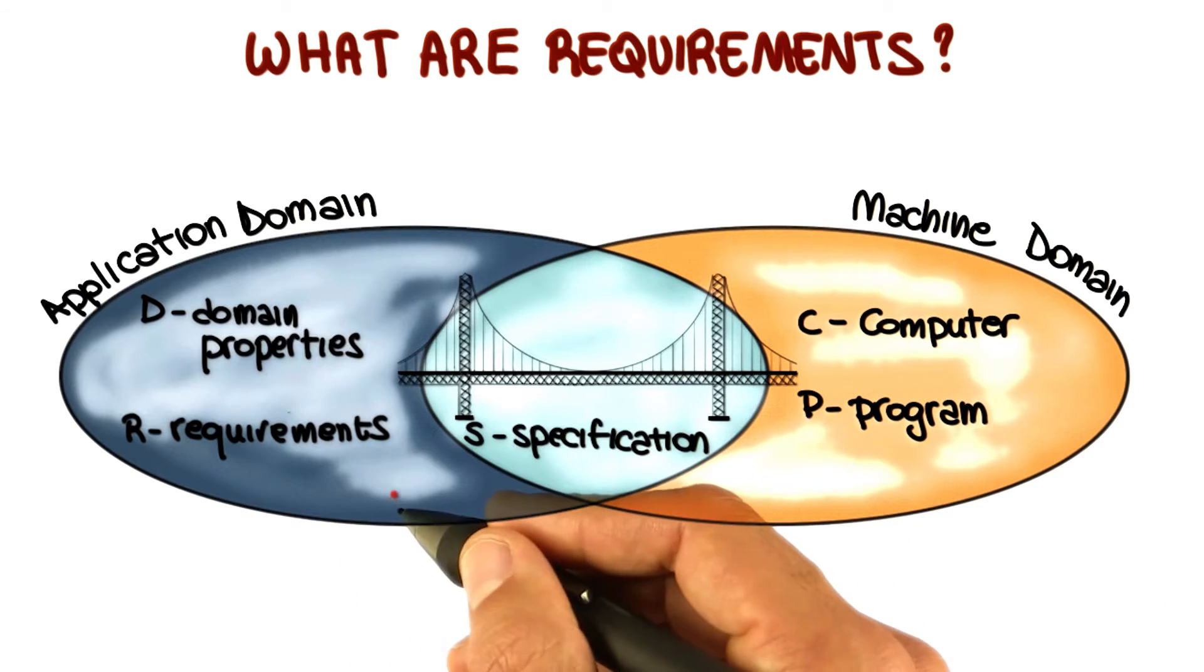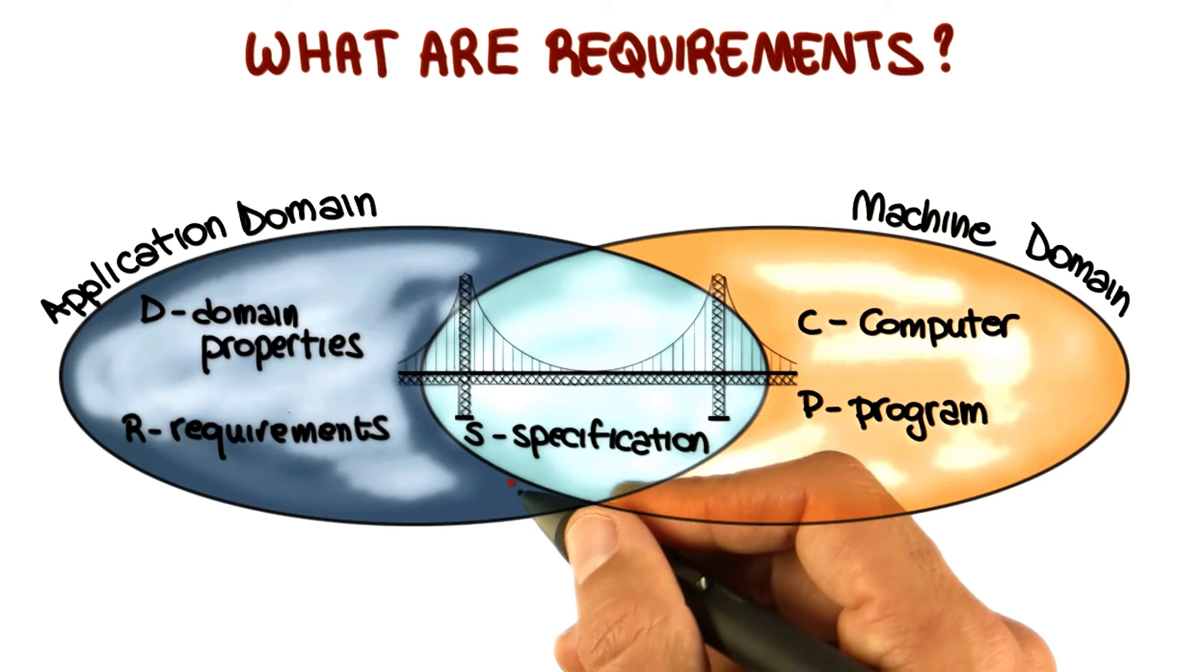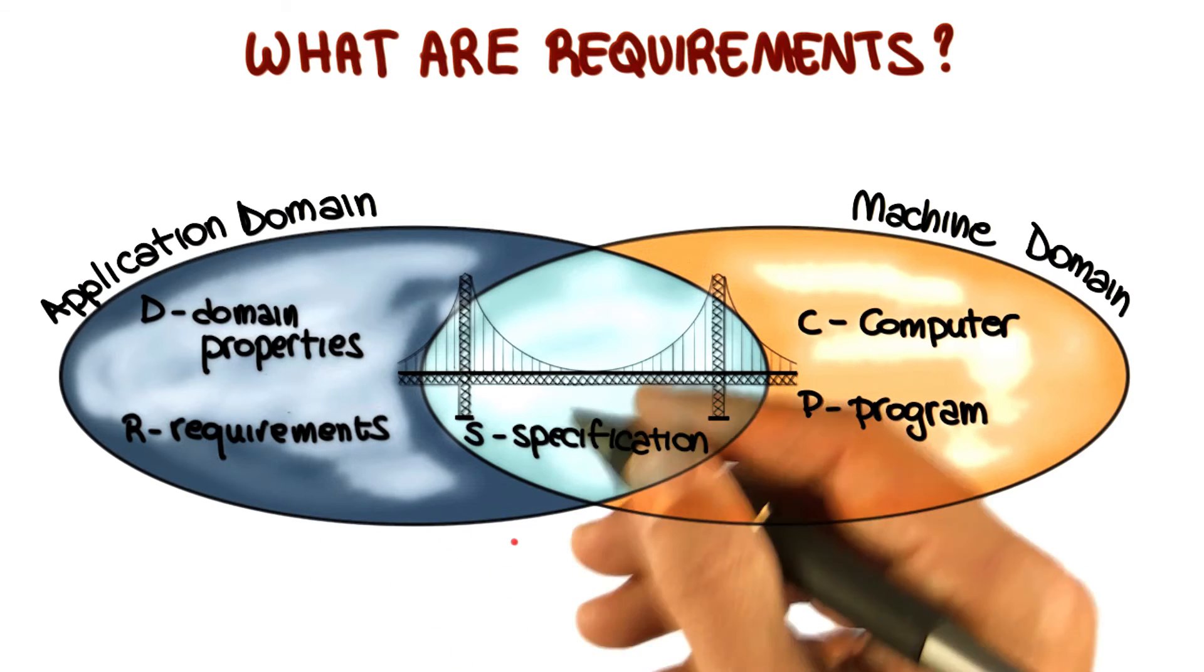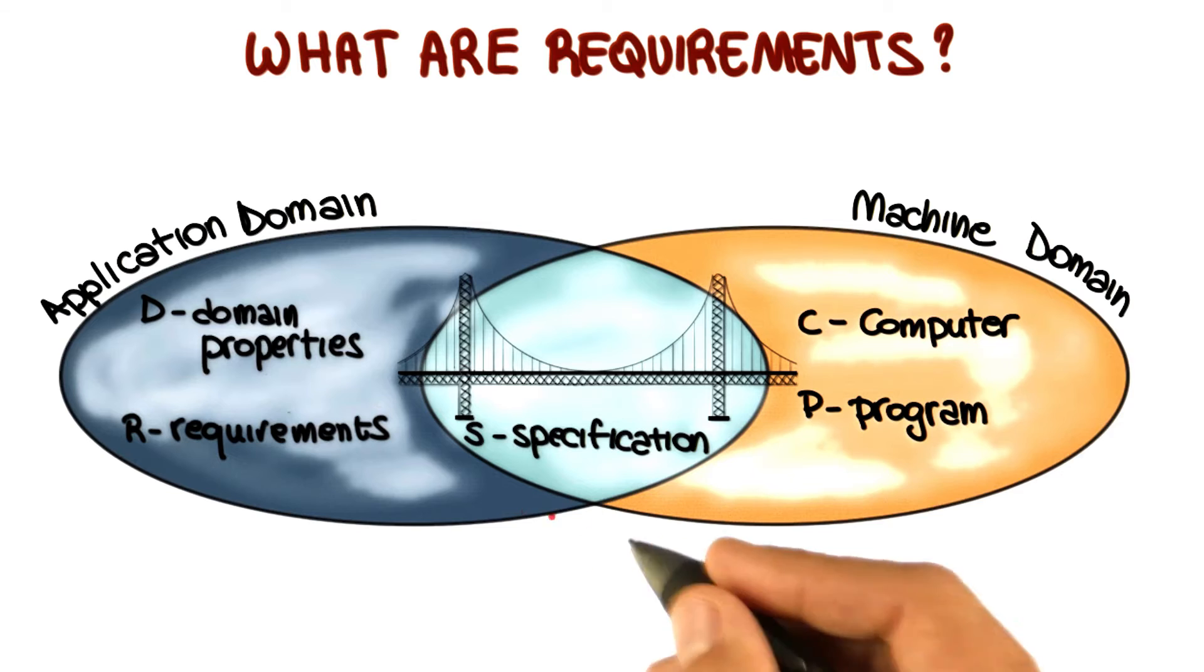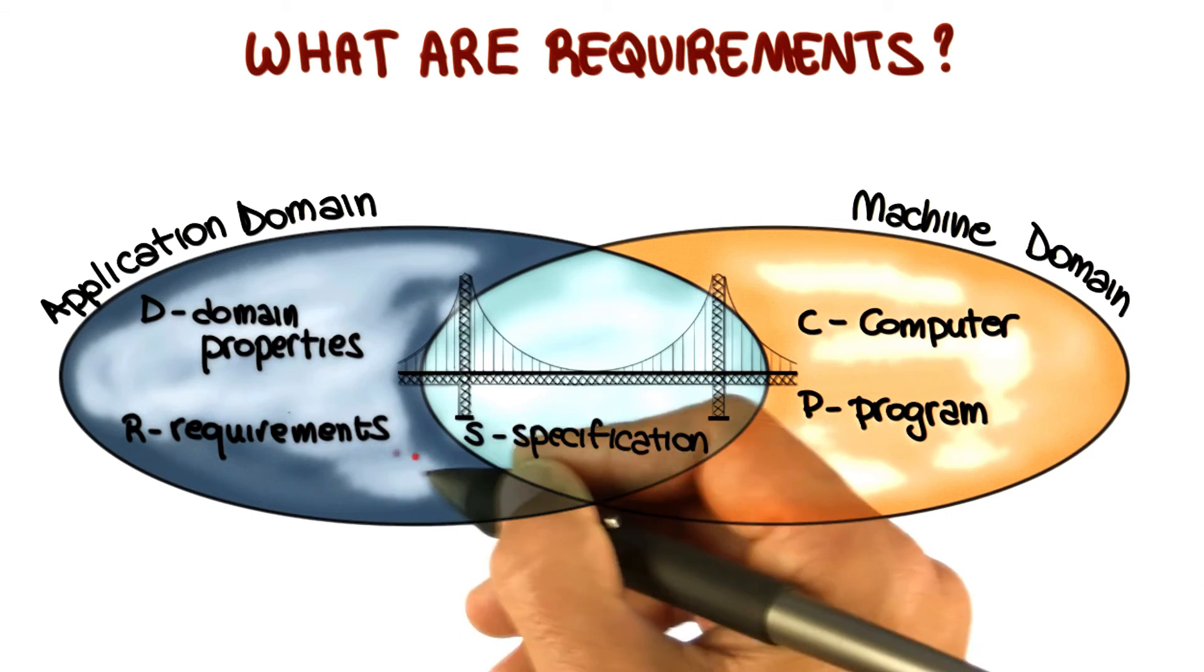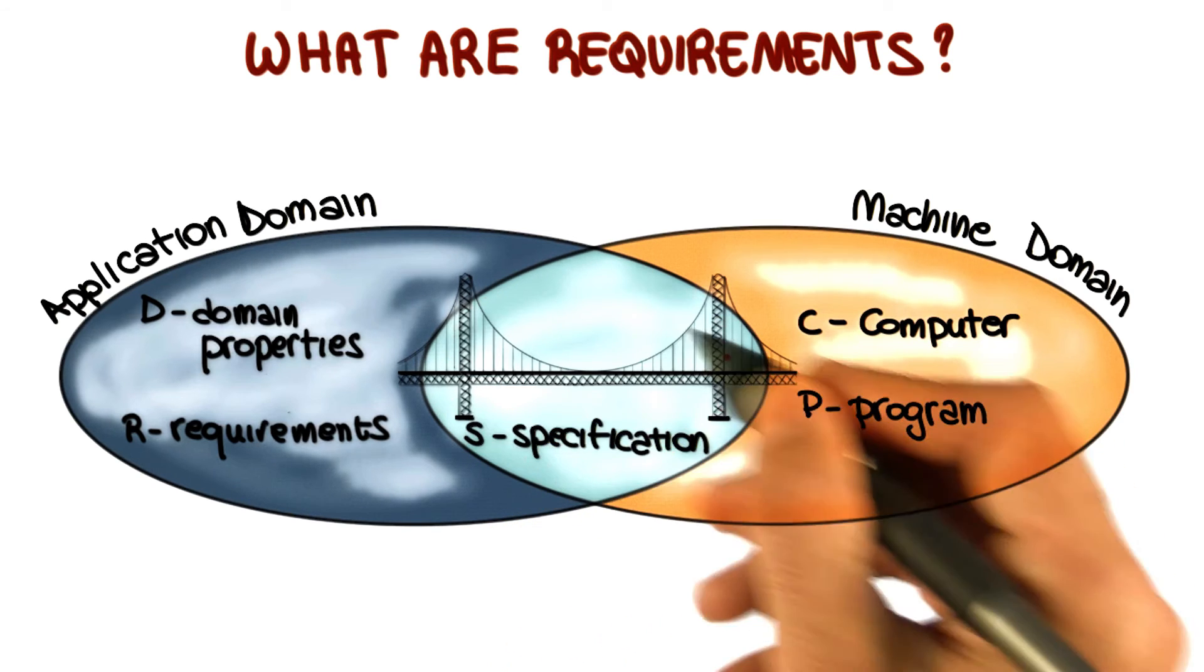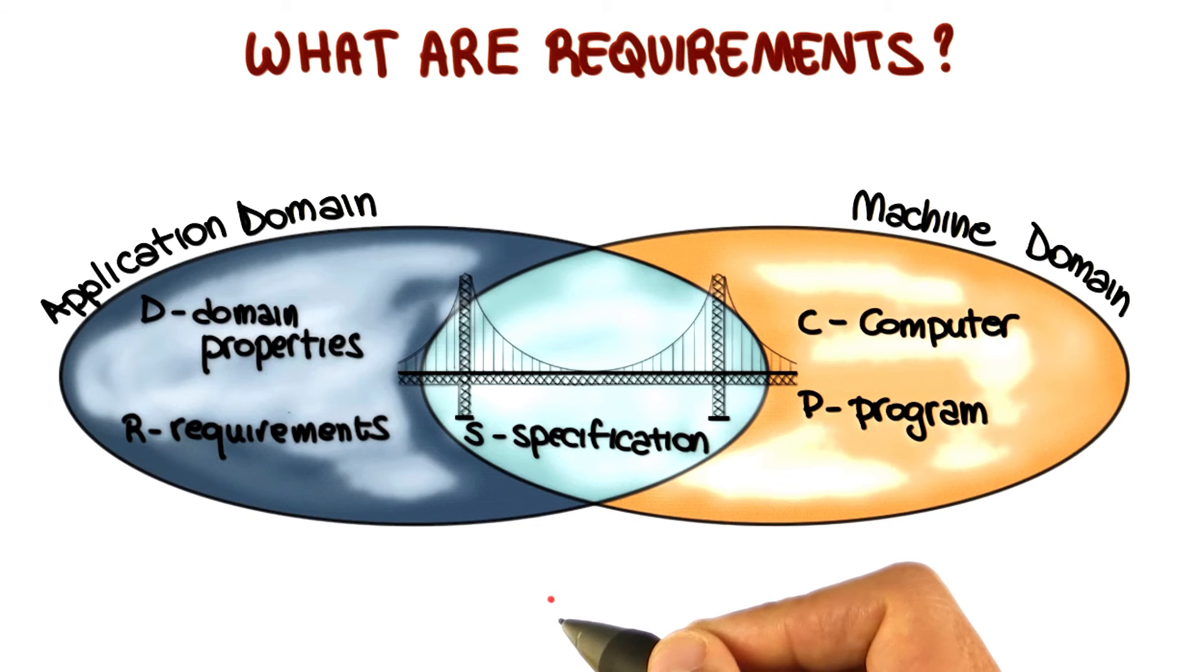And the second type of phenomena are actions in the real world that the machine can directly cause. For example, an image appearing on the screen or a device being turned on and off. Again, this is something that the machine can make happen and that can have manifestation in the real world. And again, this is therefore something on which the specification can predicate.